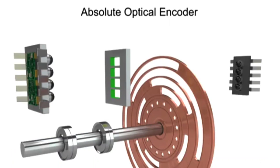An encoder is a device that converts linear or rotary movement into digital or pulse signals. The most common type of feedback device is the absolute optical encoder.